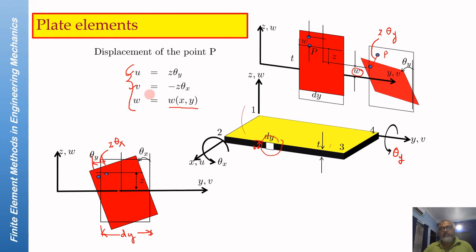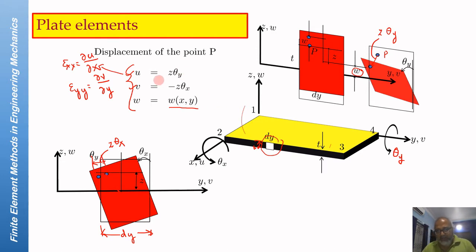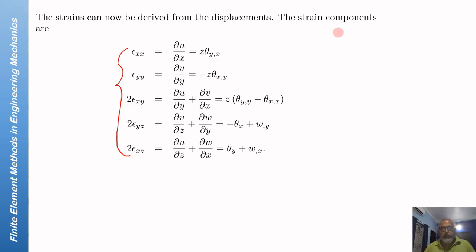These are the three displacement components that appear; two of these appear for the beam as well, but here you have three. You can now get the strain components: epsilon XX would be obtained by del U del X, epsilon YY by del V del Y, and so on. Writing down the strains by taking derivatives of the displacements gives these strain components, which can then be used in the constitutive equation to get the stresses.